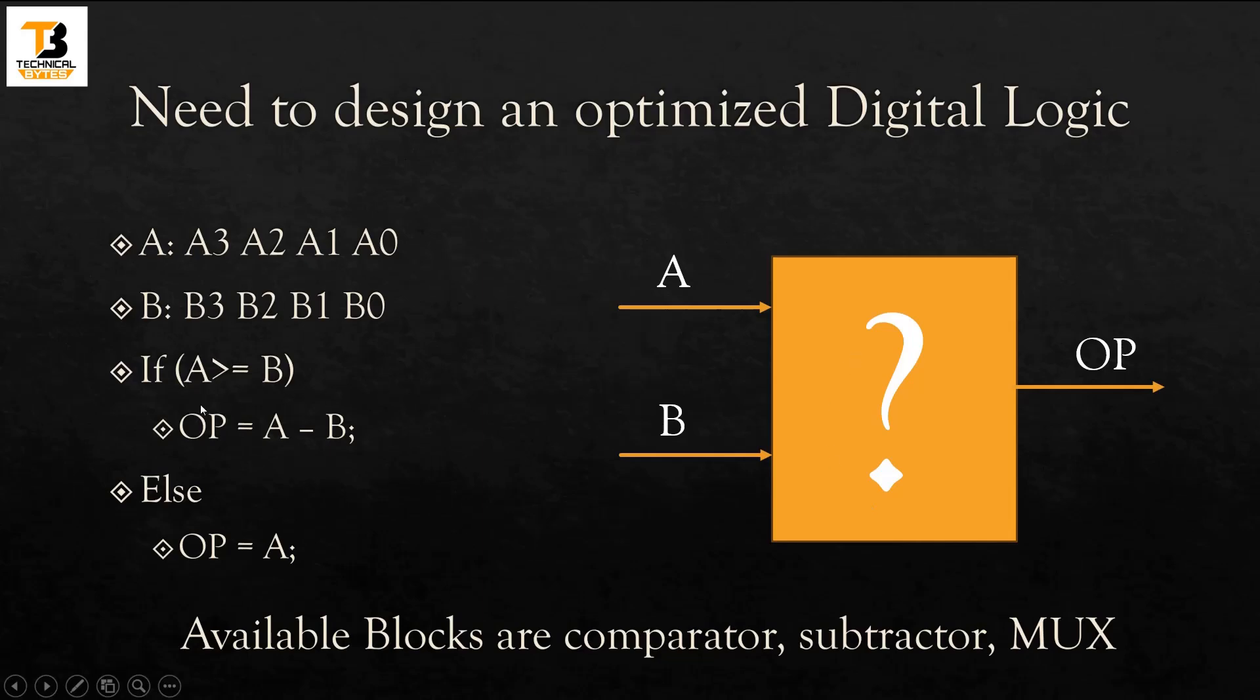Now the behavior of this logic is: if A is greater than B, then output will be equal to A minus B; else output will be equal to A only.